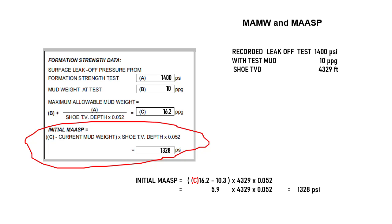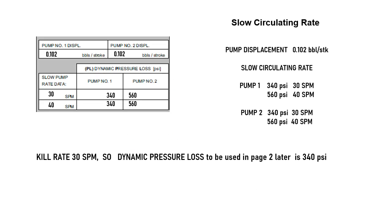Please remember to use shoe TVD for this part of the calculation. These are our SCR records for pump number 1 and pump number 2 at 30 and 40 strokes per minute. We will kill the well at 30 SPM using mud pump 1, so we will use 340 psi as our dynamic pressure loss.